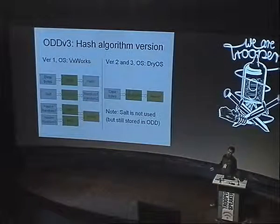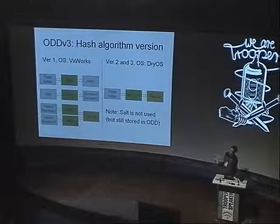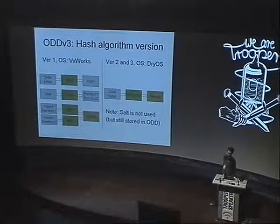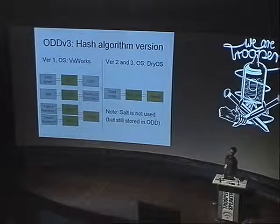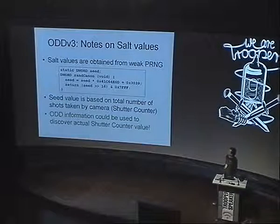Going from VxWorks to the new operating system, DryOS, used in all modern Canon cameras, they switched to just SHA-1 (160-bit) to produce the result. Salt is no longer used — it's still generated and stored in original decision data, but it's not actually used. Inside cameras, salt values are obtained from a weak invertible pseudorandom number generator.